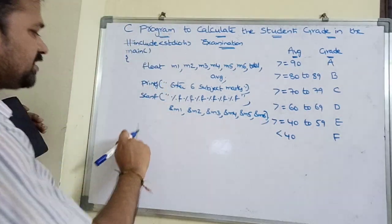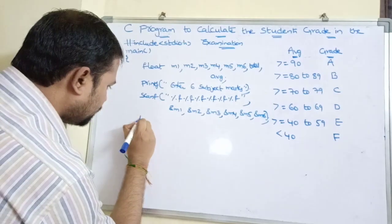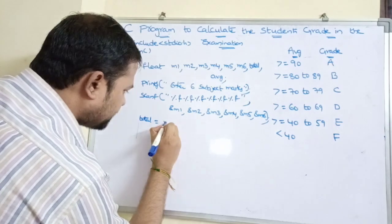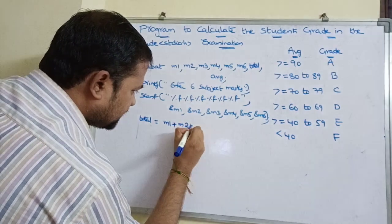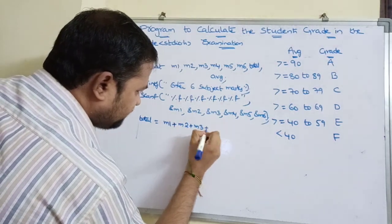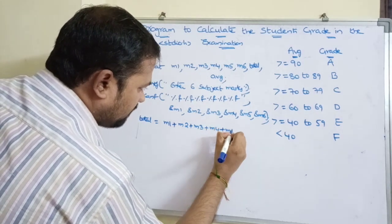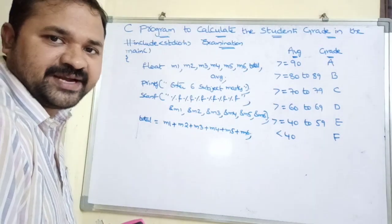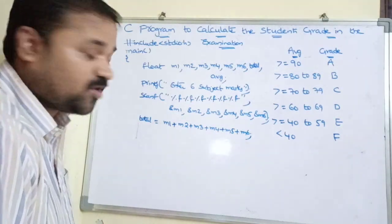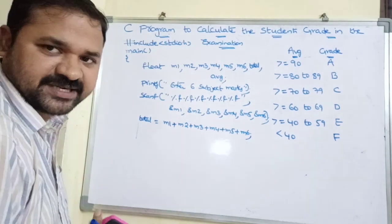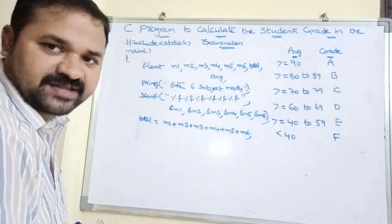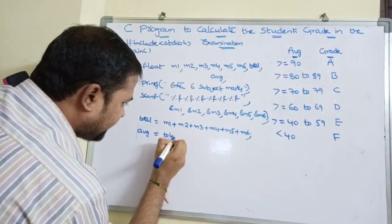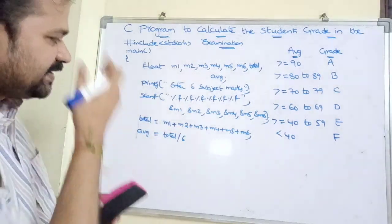Now let's calculate total and average. Total is the sum of all subject marks: M1 + M2 + M3 + M4 + M5 + M6. For average, the formula is total divided by the number of subjects, which is 6. So average = total / 6.